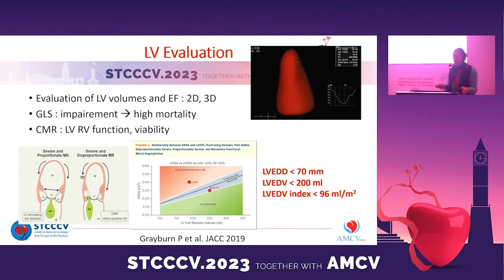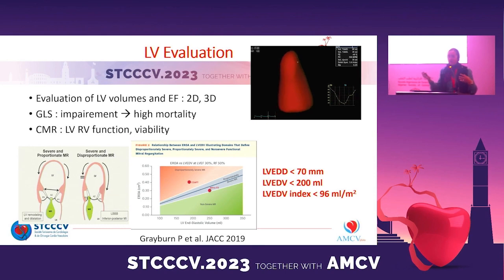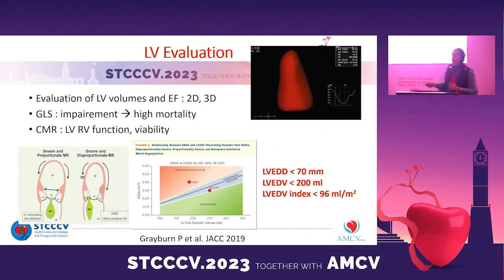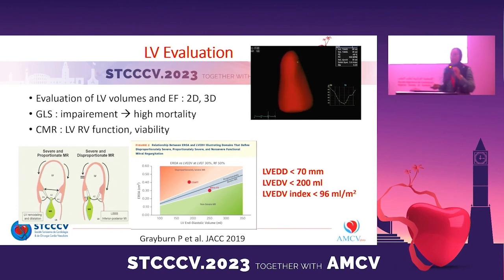This is important because there is a key difference between the COAPT study and the MitraClip French study — in COAPT, the left ventricle was not as dilated, which is why they had better results. There are criteria to evaluate before performing mitral repair: left ventricular end-diastolic diameter less than 70 mm and volume less than 96 mL, among others.